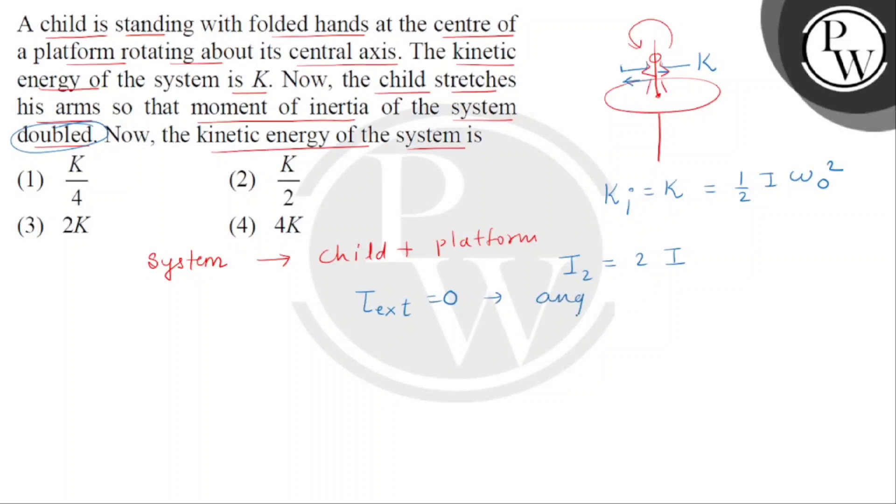It means the angular momentum of the system which we represent from L is constant. So we can write I1 omega 1 equal to I2 omega 2.